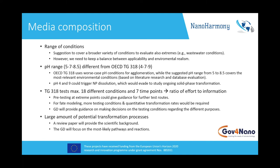OECD 318 uses worst-case pH conditions for agglomeration only. We are looking into transformation reactions and want to prevent using very low or very high pH in the test, which would actually lead to dissolution and allow reporting just dissolution rather than the actual transformation that would otherwise take place. There was a question about how many conditions could be tested, and we decided to think about a pre-testing step with roughly three extreme points to guide further testing routines and reduce the overall amount of testing.